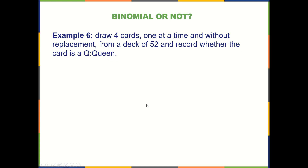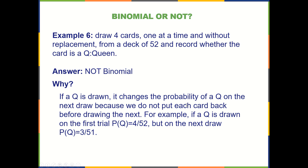How about drawing four cards one at a time and without replacement from a deck of 52, and recording whether it is a queen? Is it binomial? It's not binomial, because if a queen is drawn, it changes the probability of a queen on the next draw. We don't have independent trials and we don't have a constant probability of success. Because we do not put each card back before drawing the next, the probability of a queen on the first draw is four out of 52, but on the next draw it'll be three out of 51.